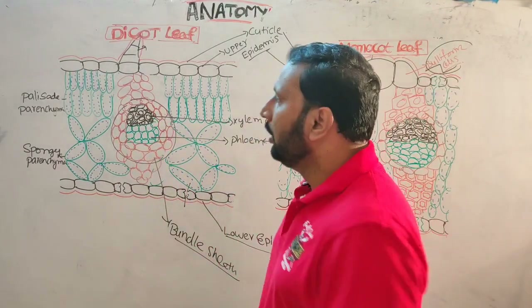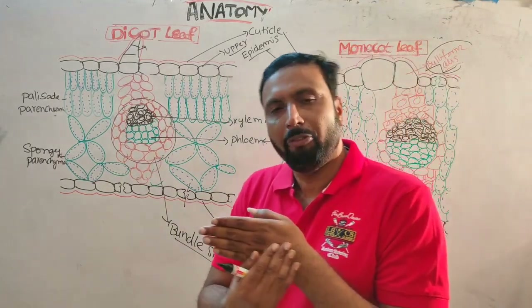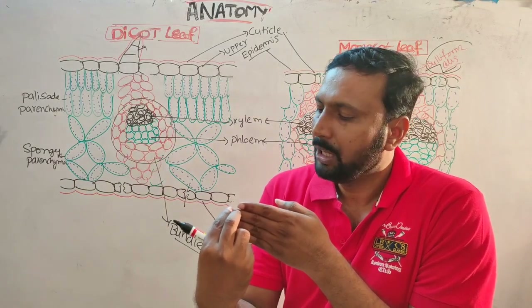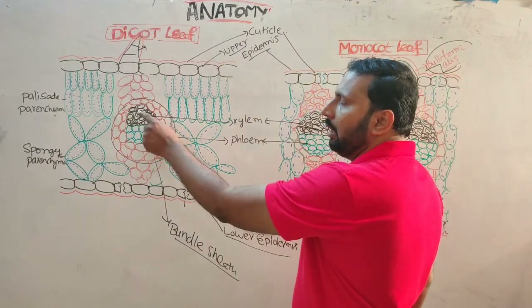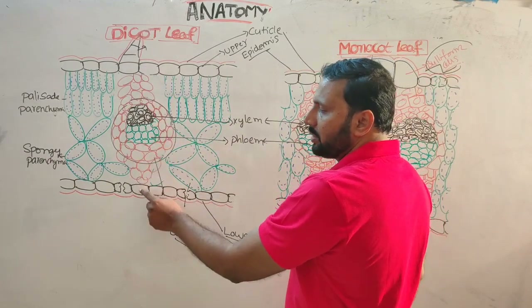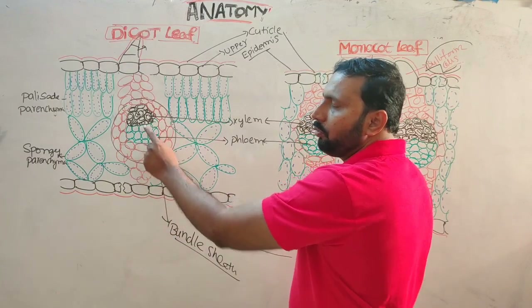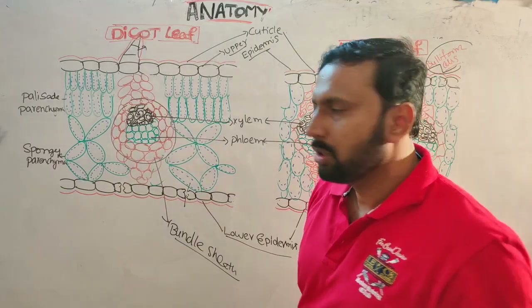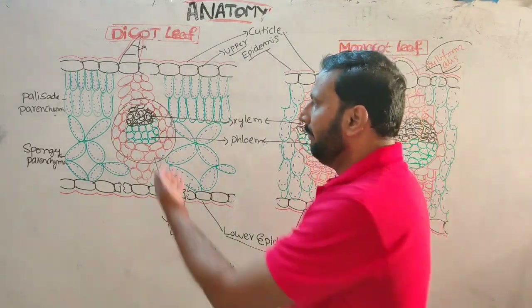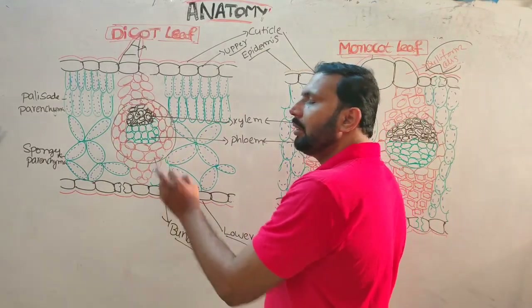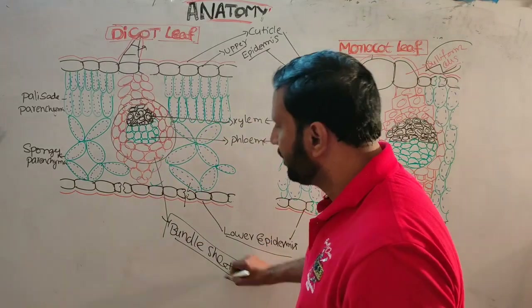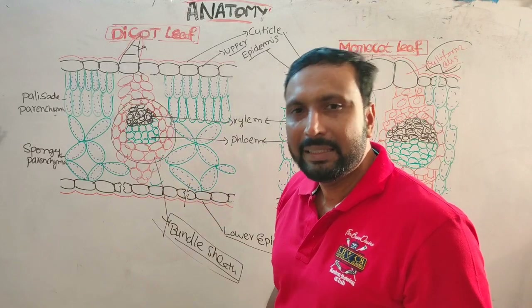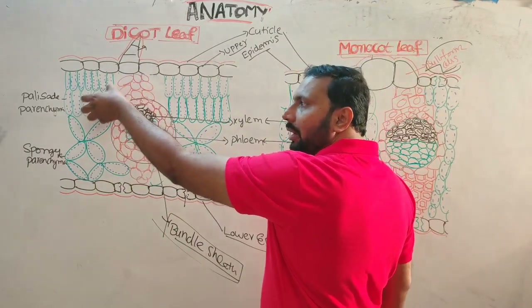In dicot leaf, vascular bundles are arranged as veins. Larger vascular bundles are at the base, gradually becoming smaller towards the tip and margin. Xylem faces the upper epidermis and phloem faces the lower epidermis. They form conjoint collateral closed vascular bundles, surrounded by specialized parenchyma called bundle sheath cells. Bundle sheath extensions help in lateral conduction of food from mesophyll to the vascular bundle.